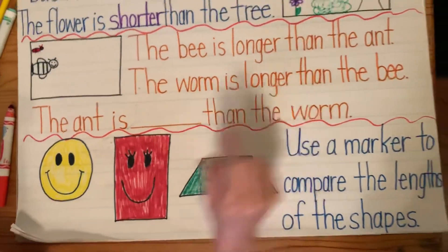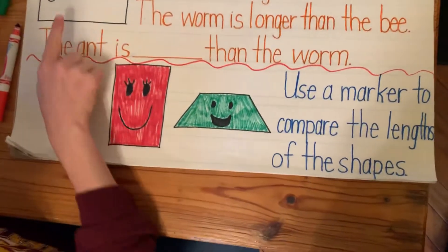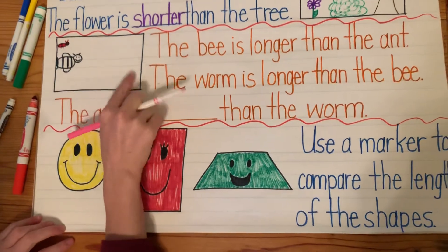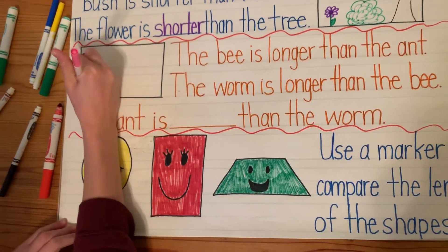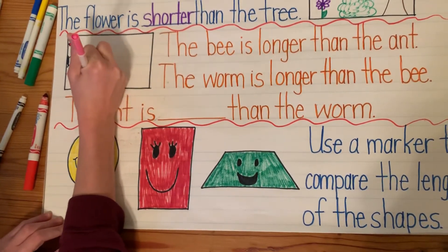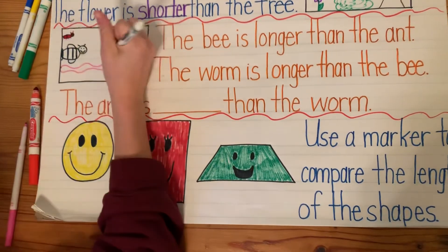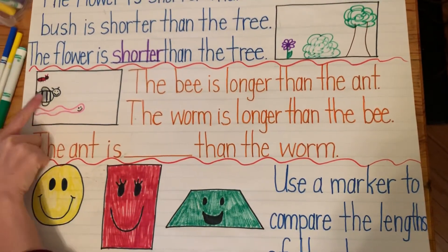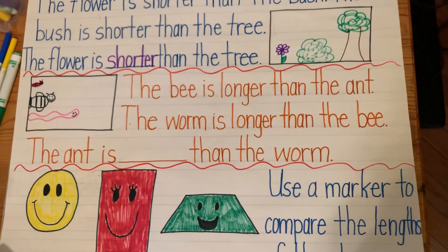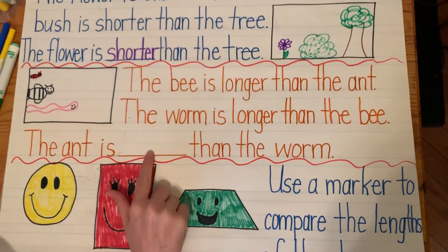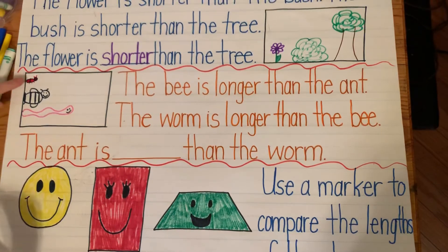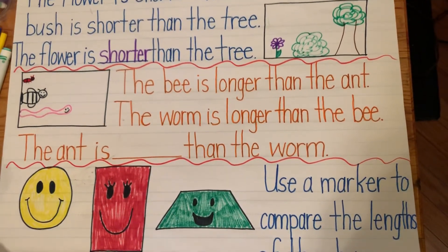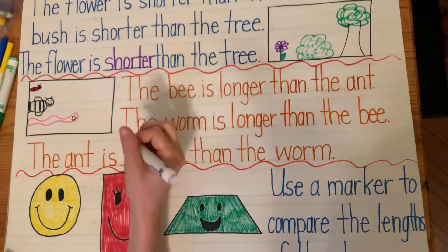It says the worm is longer than the bee. I'm going to compare because I know I'm going to have to make my worm longer. My worm is going to be longer and I made sure to start at the same place. So: the bee is longer than the ant, the worm is longer than the bee. The ant is blank than the worm — would I use shorter or longer? The ant would be shorter than the worm.